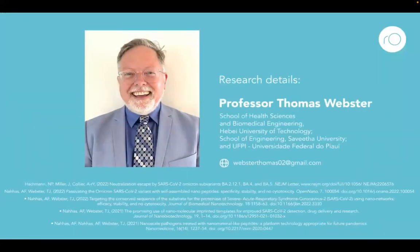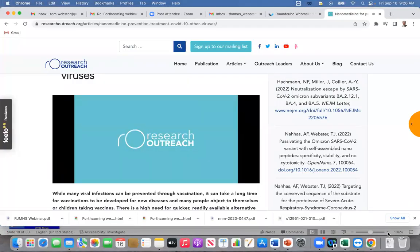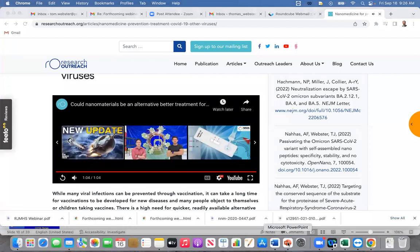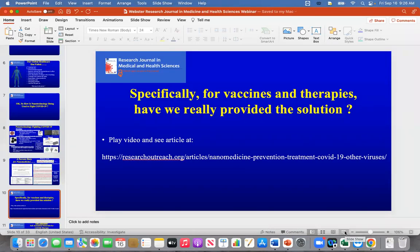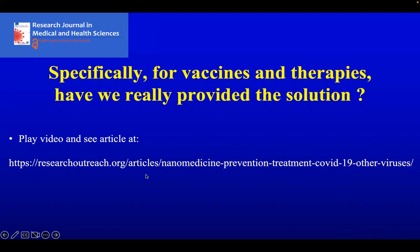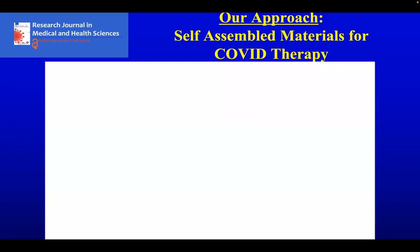That quick video was made by a news agency and is available at the website we'll post. The message is: although we have vaccines, that's not enough. Some people are just not going to take a vaccine, so we need other approaches — therapies that can be used for those who don't want to be vaccinated. Because the more the virus is out there, the more it's going to affect people. Here is our approach, and I have another quick video to show you.